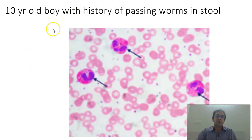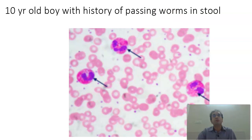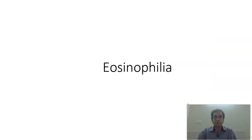Next history is that of a 10-year-old boy with history of passing worms in stools. You find a lot of eosinophils here in this field — it's eosinophilia. Causes of eosinophilia can be parasitic infestation, Loffler syndrome, Hodgkin's lymphoma, hay fever, and asthma.